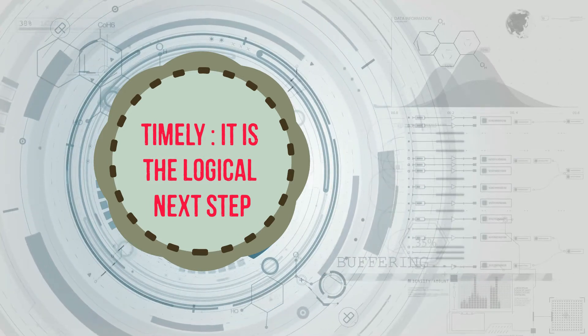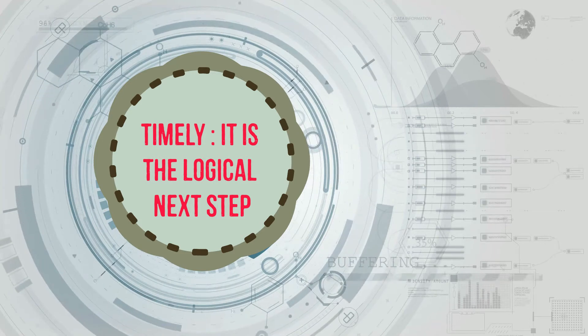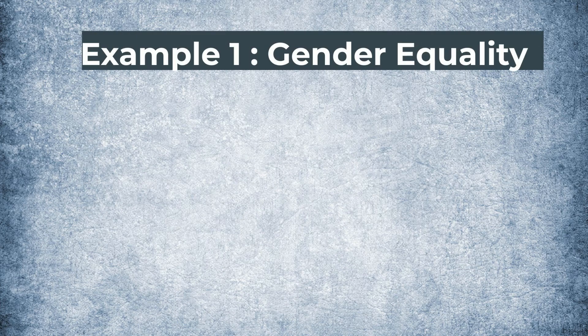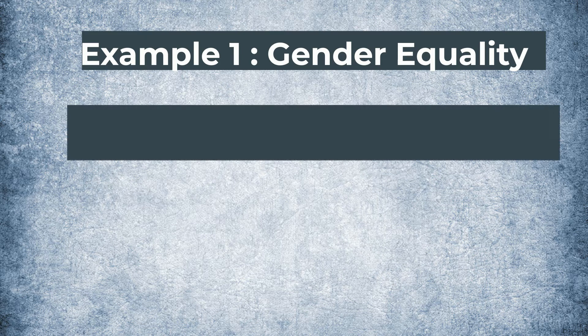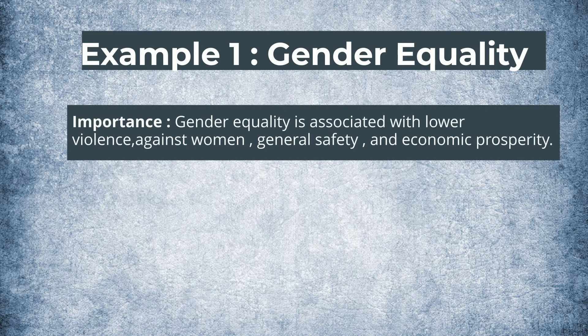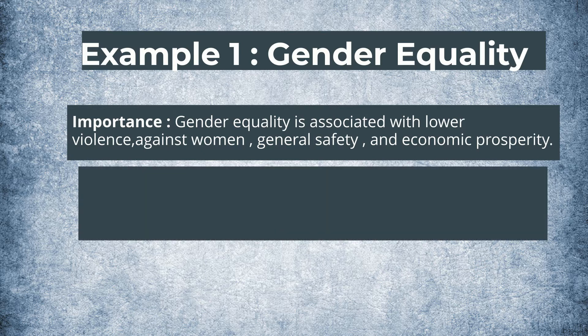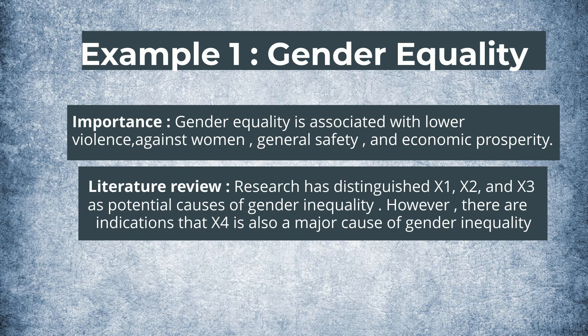Let's have a look at a few examples. Let's take gender equality as a research topic. A researcher could argue for the importance of this topic by saying that gender equality is associated with lower violence against women, general safety, and economic prosperity — making this an important topic. Then the researcher may argue, as part of a literature review, that the question is also novel and timely.